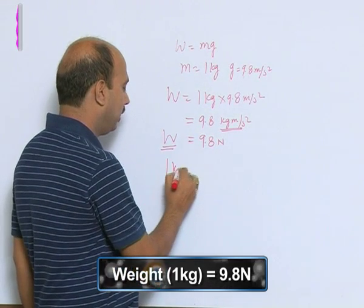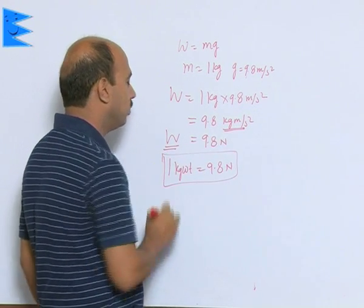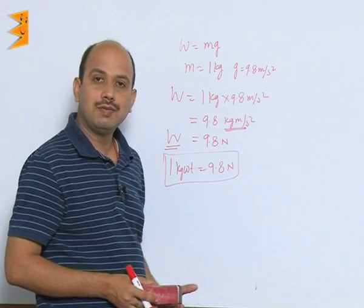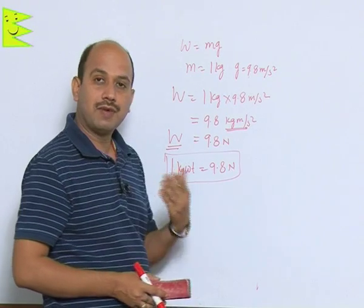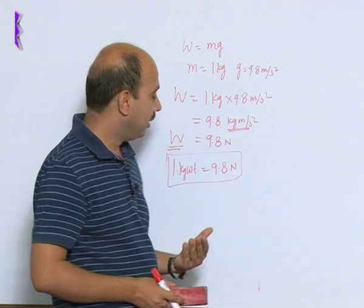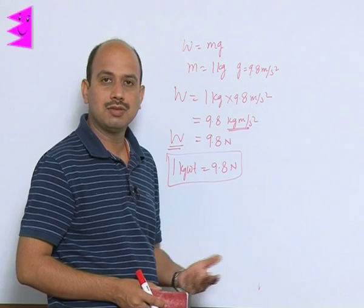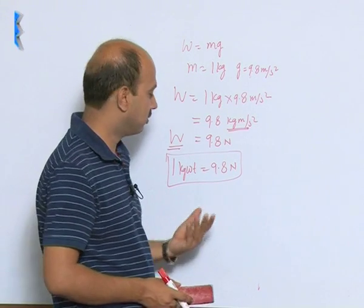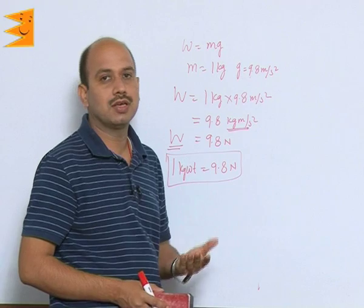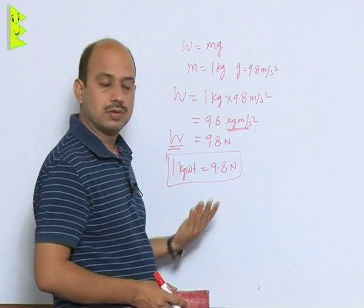So, 1 kg weight equals 9.8 Newton. If weight is given to you in kg weight, you can convert it using this relation, and you can also find its mass. In daily life, mass and weight are used for the same purposes — people say 60 kg weight when they mean 60 kg mass. When G remains the same, 60 kg weight refers to 60 kg mass. These are the key concepts about mass and weight.